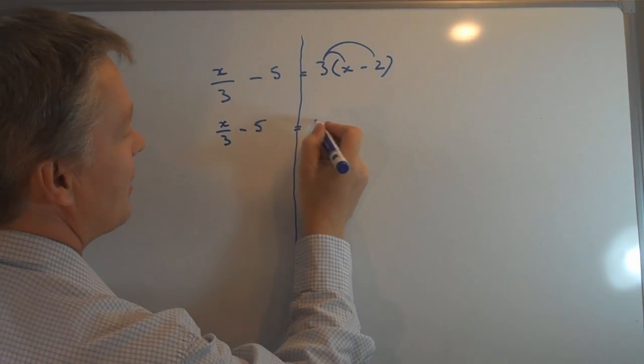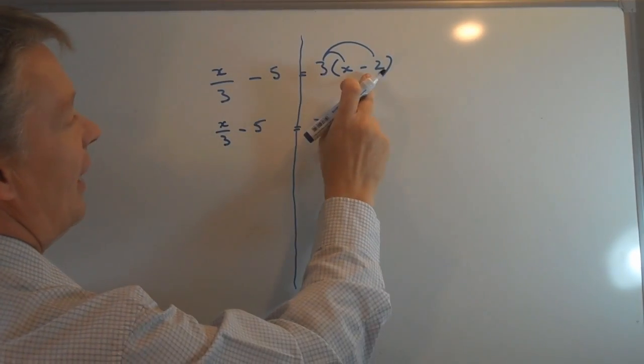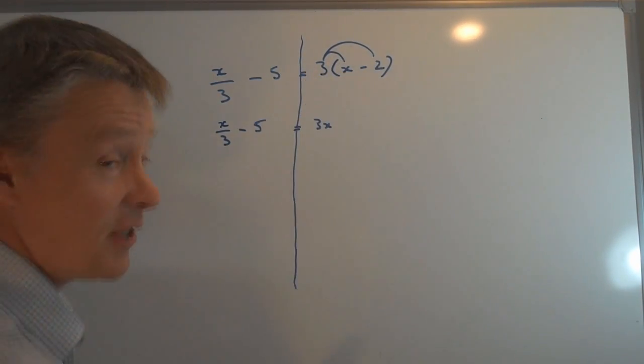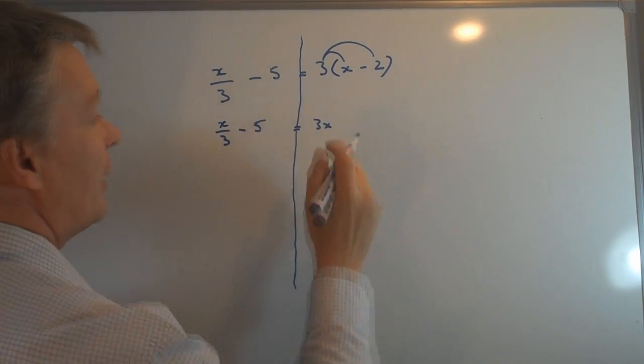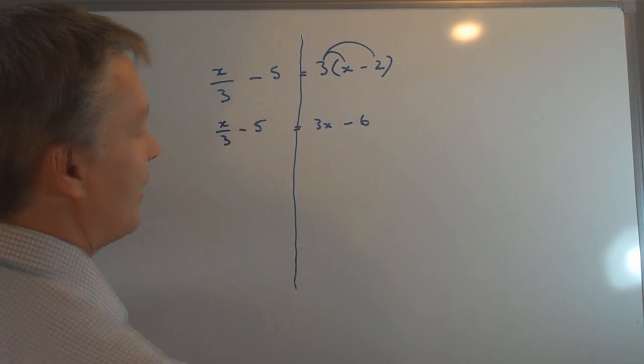So 3 times x is 3x, and on this side I have positive 3 times minus 2 which is minus 6.